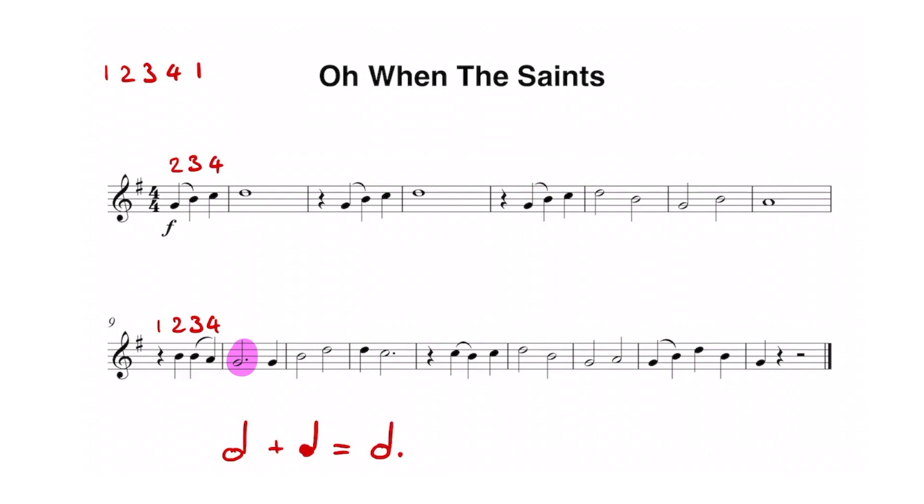The piece finishes off with more minims similar to the previous line but then moves to crotchets for the final two bars for a fancy ending. We play notes G, B and D which make up the G major arpeggio.